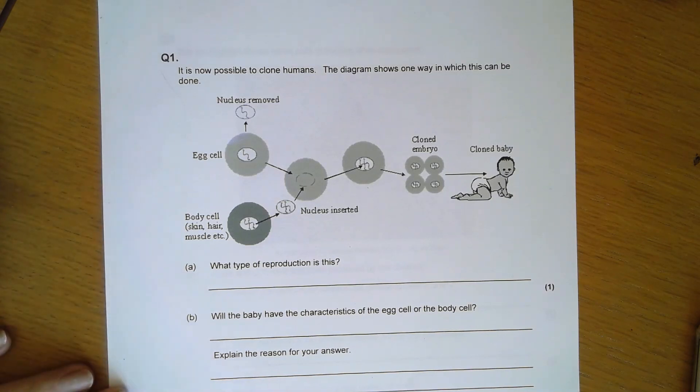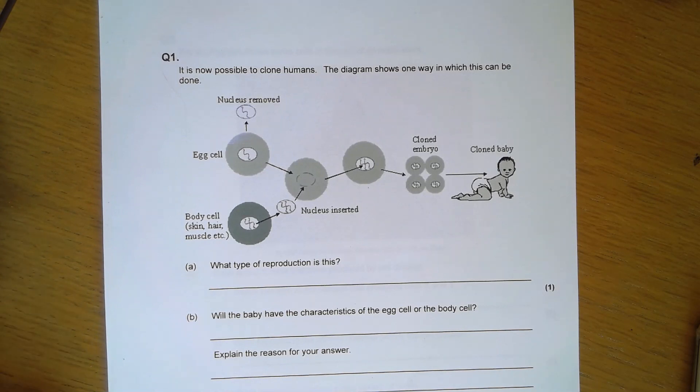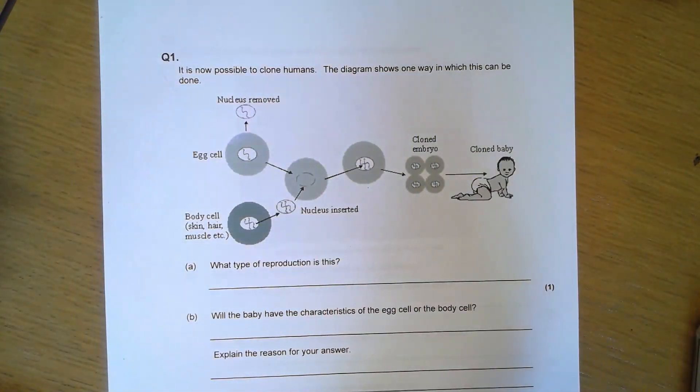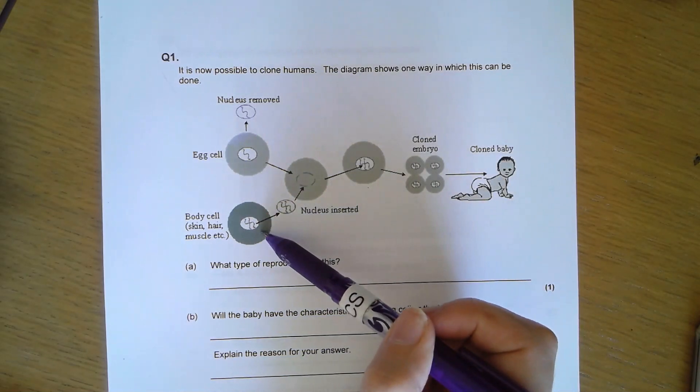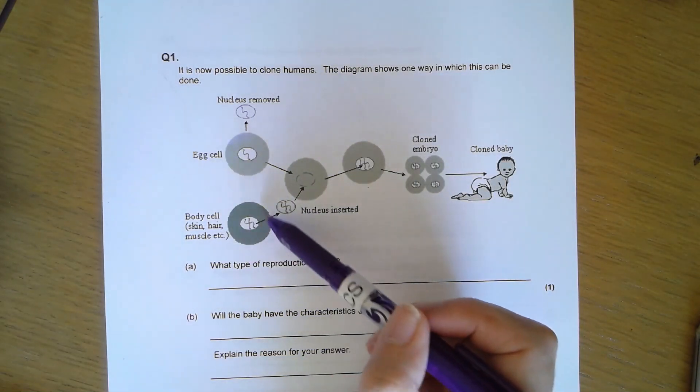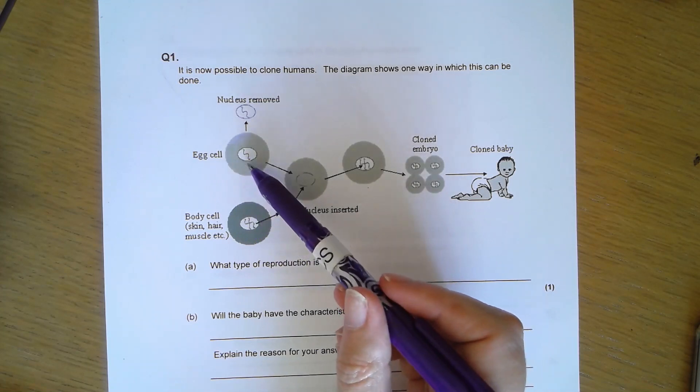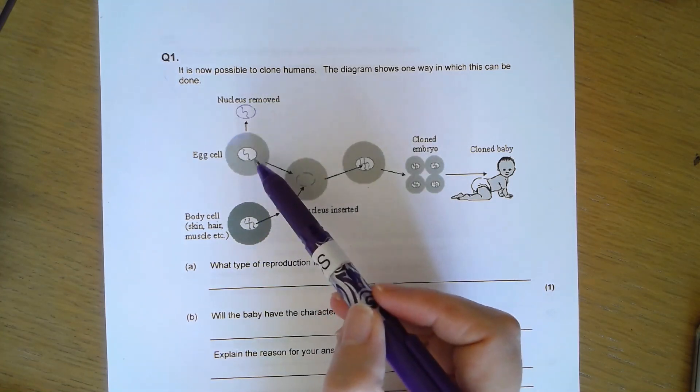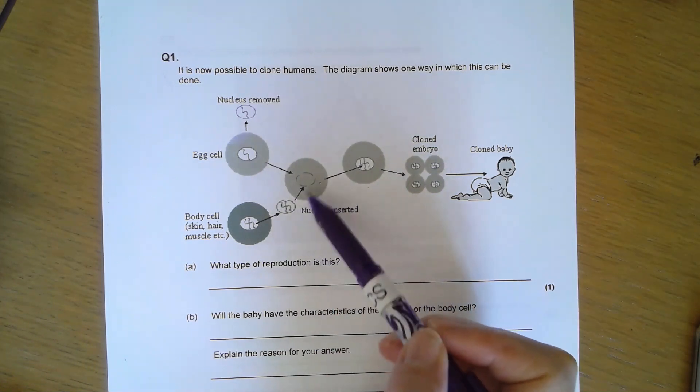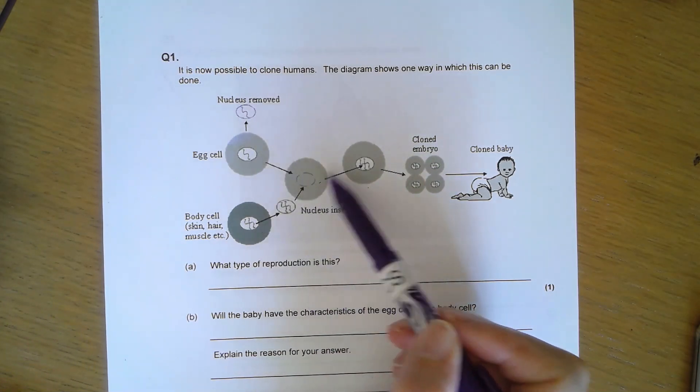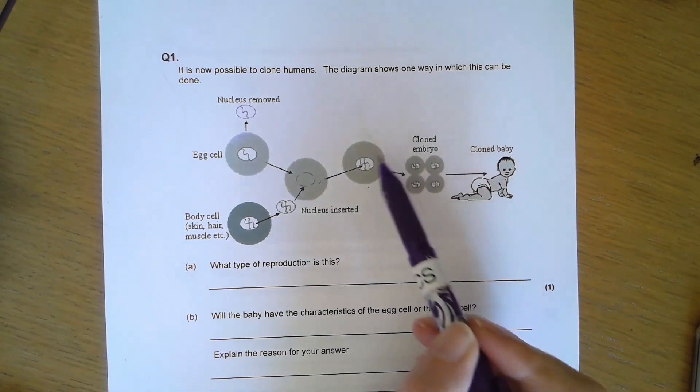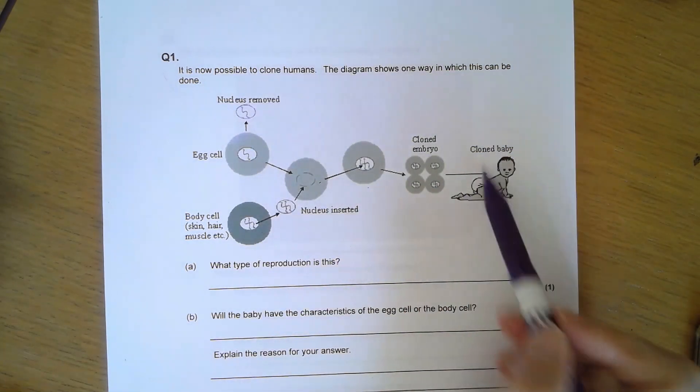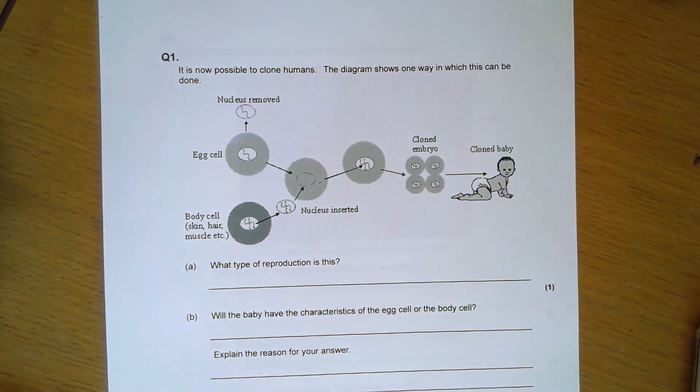Let's start. Is it now possible to clone humans? The diagram shows one way this can be done. I've got a body cell from the human that I would like to clone, an egg cell with the nucleus removed, then put the nucleus of the body cell into the egg cell, and then end up with a cloned embryo. They haven't put in the electric shock, have they? Then that cloned embryo becomes a cloned baby.